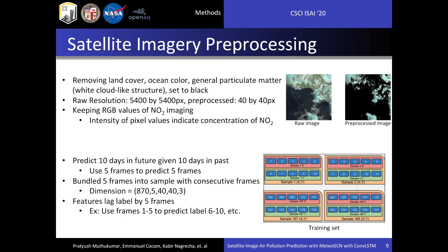We then constructed our set of images in a format usable by the ConvLSTM. In the 5-year time span, there are 870 raw images of NO2. We bundled images so that roughly 10 days of past data predict 10 days into the future — specifically, 5 frames to predict 5 frames, since each frame is 46 hours apart. Each bundle was created by staggering 5 consecutive frames, giving a 5D input tensor of 870 bundles of 5 frames each, where each frame is a 40×40 pixel image with 3 RGB channels. The label set was created by shifting 5 frames: frames 1–5 predict labels 6–10, frames 2–6 predict labels 7–11, and so on.